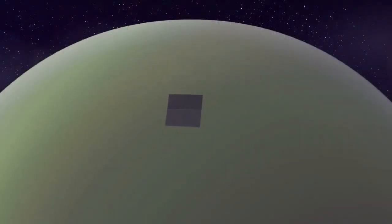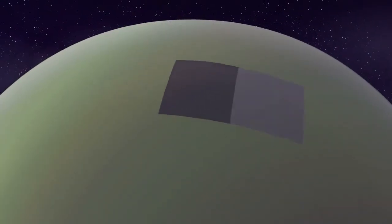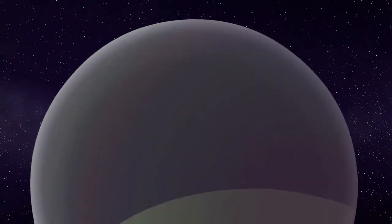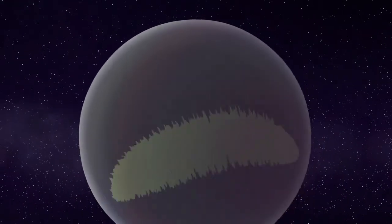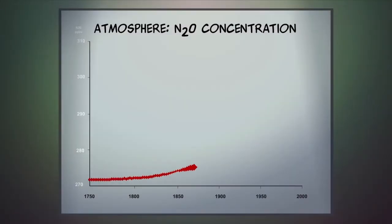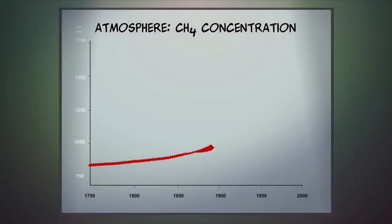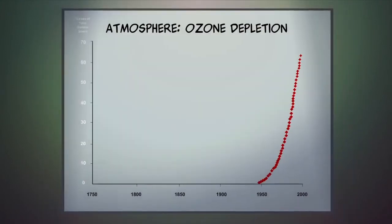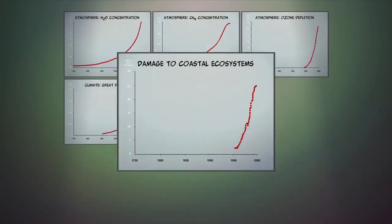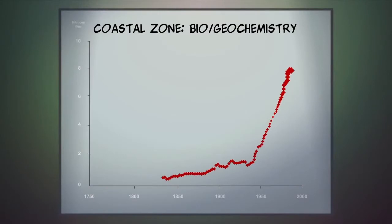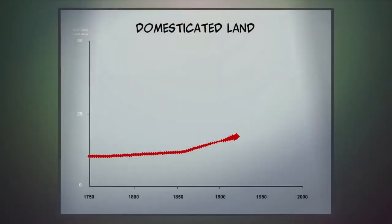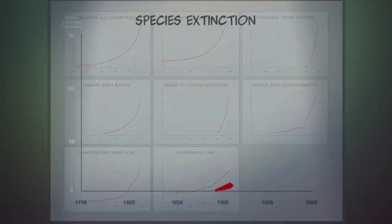On a flat, infinite Earth, this might not be a problem. However, as the Earth is round and finite, we will eventually face limits to growth. Economic expansion has resulted in increases in atmospheric nitrous oxide and methane, ozone depletion, increases in great floods, damage to ocean ecosystems including nitrogen runoff, loss of rainforest and woodland, increases in domesticated land, and species extinctions.